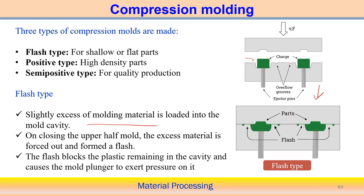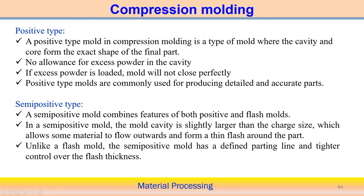After pressing in the flash type mold, flash is formed around the part. This is an advantage in that material can flow into intricate areas, but it requires post-processing to remove the flash. In the positive type compression molding, the mold cavity is filled with an exact amount of thermoset polymer to produce the final component, thereby eliminating flash formation — no excess powder allowance is required.